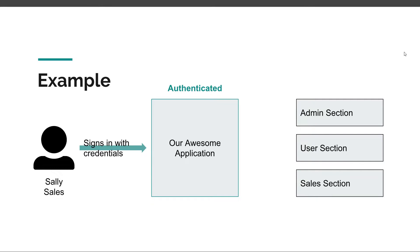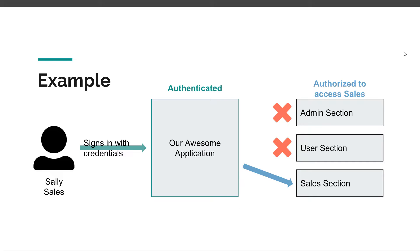Sally also has some rights inside the sales app. For example, Sally is allowed to view the sales section and use all the features related to her job and to sales. On the other hand, Sally is not allowed to access the admin section and she's not allowed to access the user section. In this context, we say that Sally is authenticated and she's authorized to access the sales features.